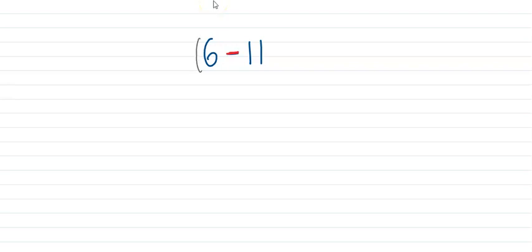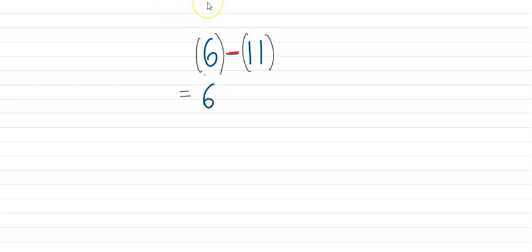When we put the brackets we come to know that this is positive 6 and this is positive 11. That means we are taking away positive 11 from positive 6. We will change subtraction to addition and add the opposite, so we will add negative 11. The answer will be negative 5. I hope it is clear. Thanks for watching. Goodbye.